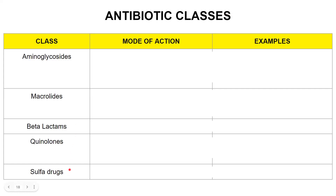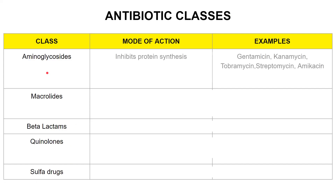Aminoglycosides include antibiotics like gentamicin, kanamycin, tobramycin, streptomycin, and amikacin. Most of you would be aware that aminoglycosides inhibit protein synthesis.